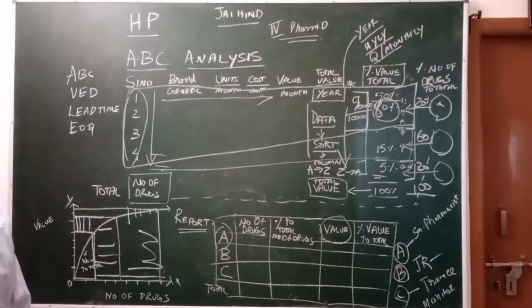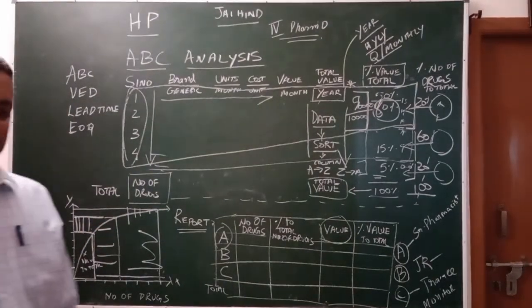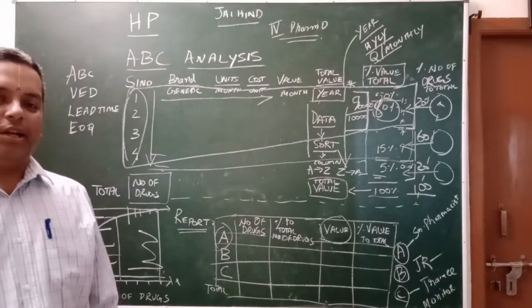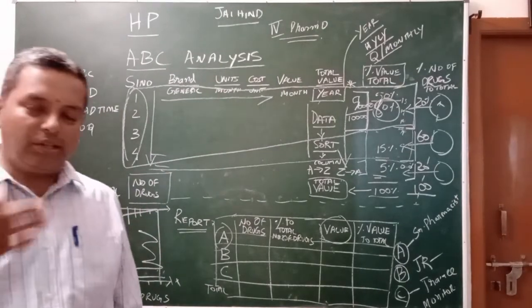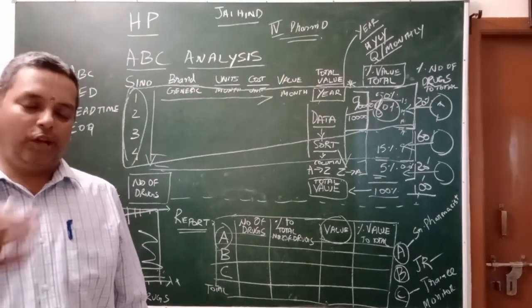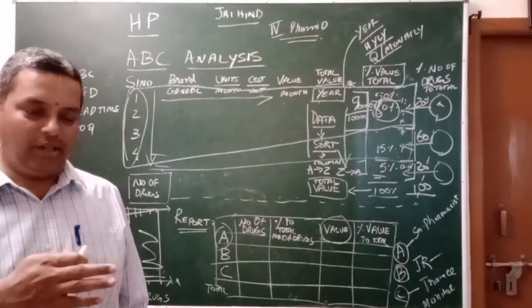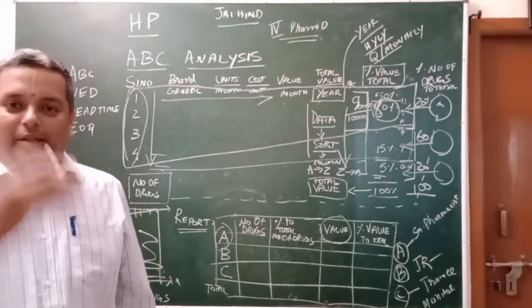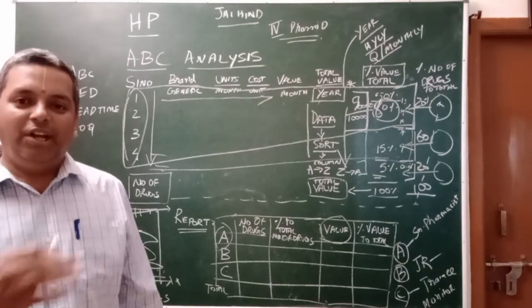This is the ABC analysis for inventory control. The same steps apply to VED analysis, and category 1, 2, 3 analysis — also called XYZ analysis. Thank you.